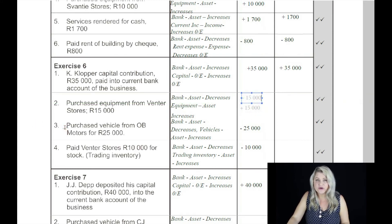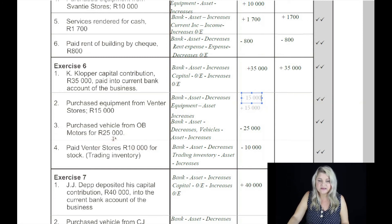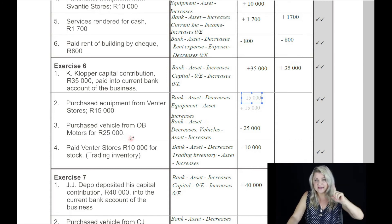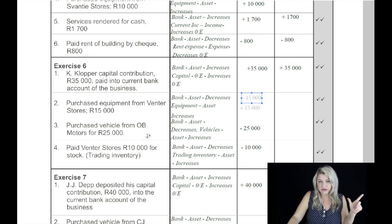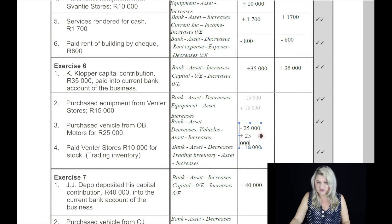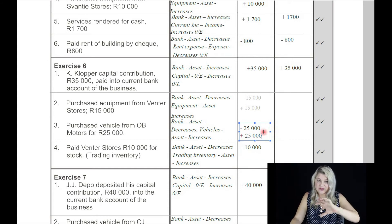On the third: purchased a vehicle from OB Motor Stores for 25,000 Rand. Once again there are two assets — bank and vehicles. Bank is being decreased because we're paying for it, and the other asset, vehicles, is being increased to the value of 25,000 Rand. So it doesn't have an effect on owner's equity because the one cancels out the other.